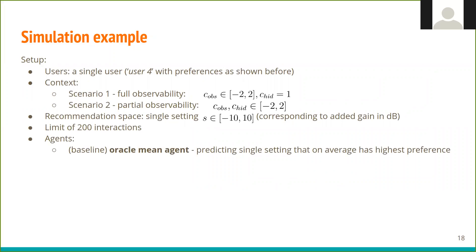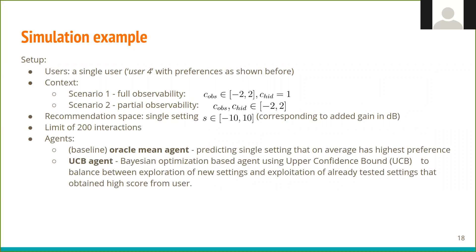We test two agents, one Oracle mean agent, which is the baseline predicting single setting that on average has the highest performance, and UCB agent, which is Bayesian optimization based agent, using upper confidence bound to balance between exploration of new settings and exploitation of already tested settings that obtain high score from user.